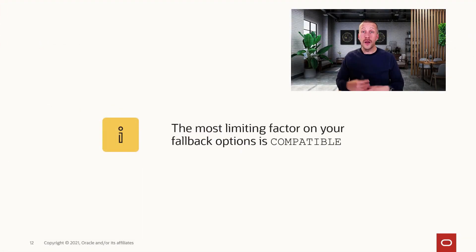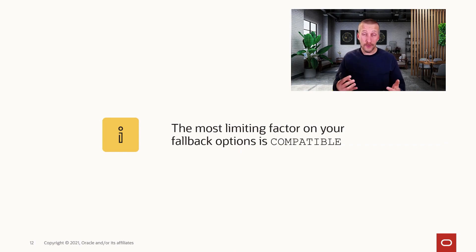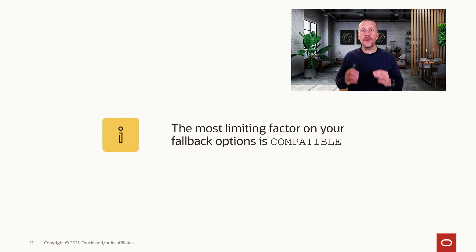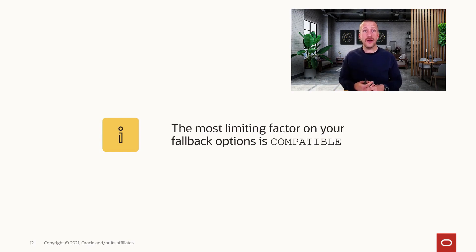When we talk about the portfolio of options that you have for your fallback, there is one thing that can really strike out a lot of those options, and that is the compatible parameter. It can really have a limiting effect on the amount of fallback options you have at your disposal.